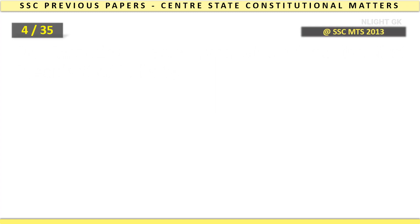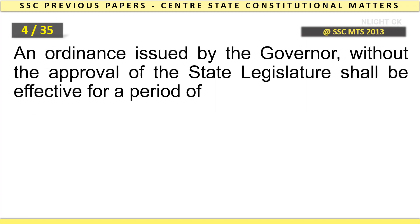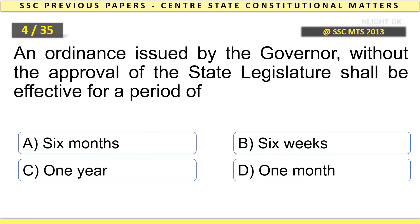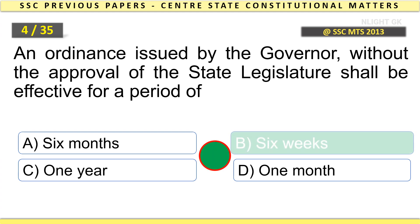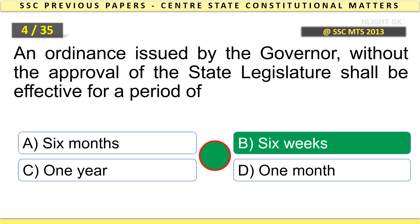An ordinance issued by the Governor without the approval of the State Legislature shall be effective for a period of Six Weeks.